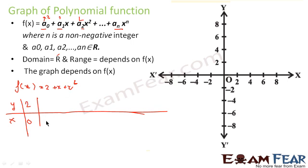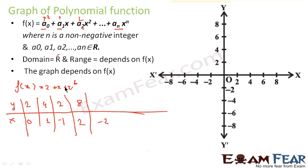For x = 0: y = 2 + 0 + 0 = 2. For x = 1: y = 2 + 1 + 1 = 4. For x = −1: y = 2 − 1 + 1 = 2. For x = 2: y = 2 + 2 + 4 = 8. For x = −2: y = 2 − 2 + 4 = 4. For x = 3: y = 2 + 3 + 9 = 14. For x = −3: y = 2 − 3 + 9 = 8. Let's plot these points in the graph.